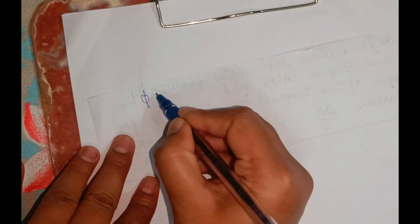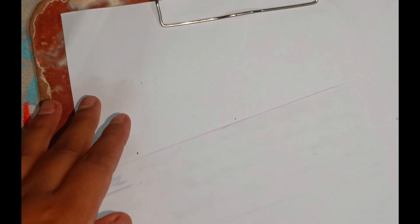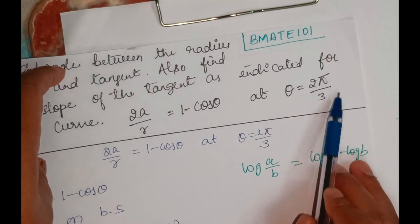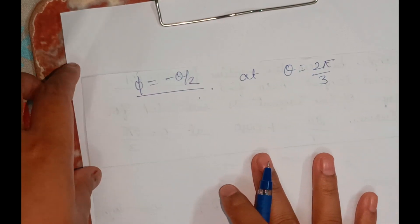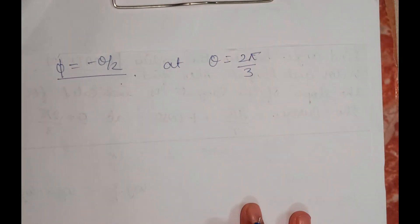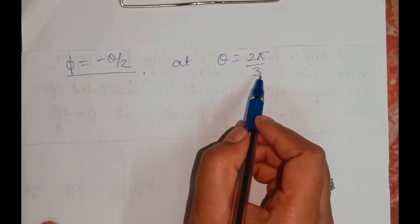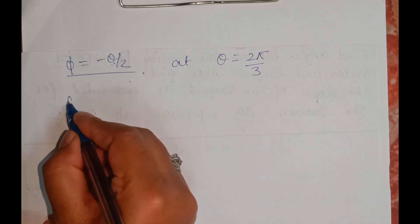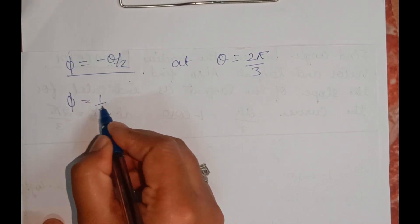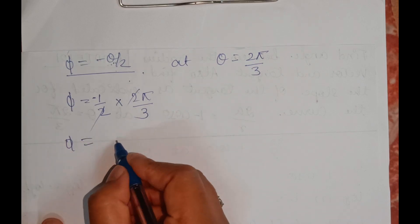Now φ = -θ/2. According to the question, θ = 2π/3. Substituting: φ = -1/2 × (2π/3). The 2s cancel, so φ = -π/3. I've found the φ value.